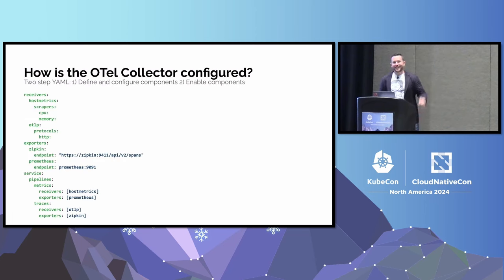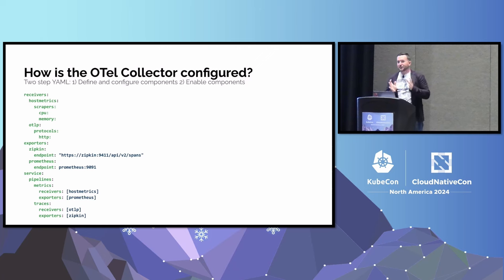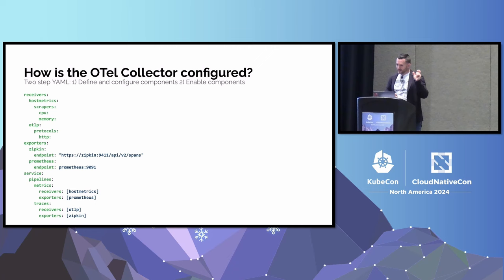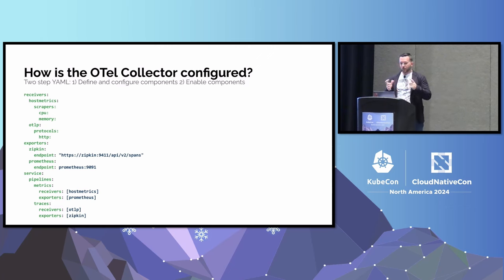How is the OpenTelemetry collector configured? YAML. Every component I mentioned is a top-level construct in the YAML config — you can see receivers, processors, exporters. Very simple. For every single receiver, a receiver has a name — for example, the host metrics receiver — and every component can have some amount of configuration that is documented. You specify the right amount of configuration for it and that component will work.